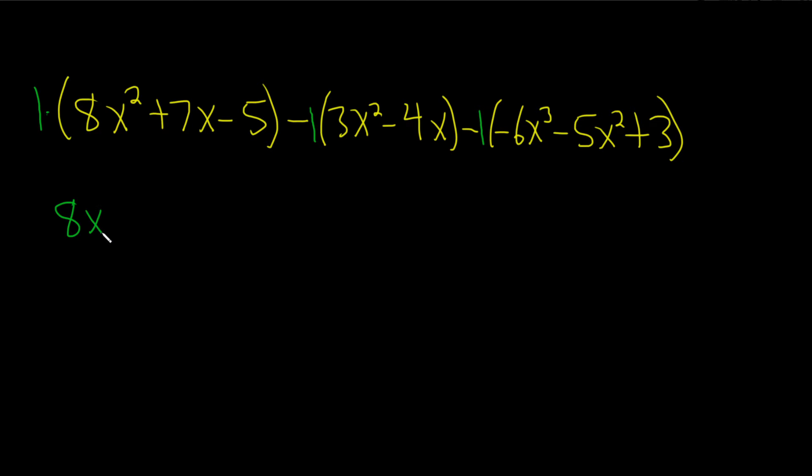And then here we can distribute this negative 1. So negative 1 times 3x squared is negative 3x squared and then negative 1 times negative 4x becomes a positive 4x.